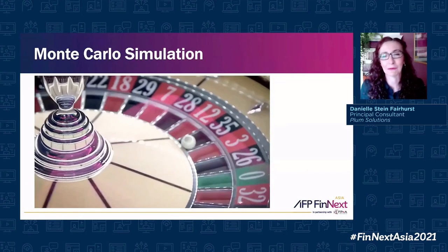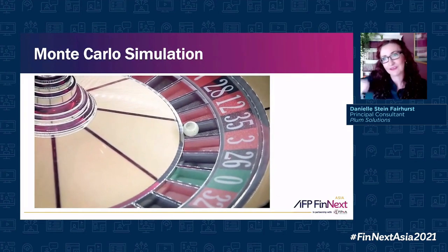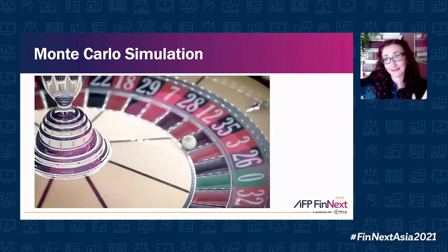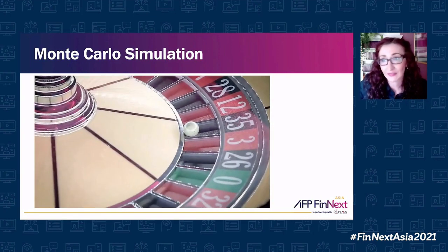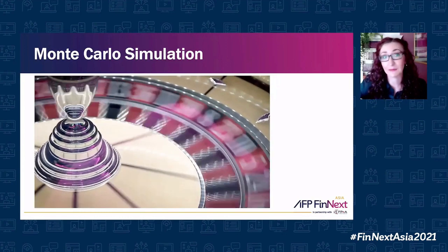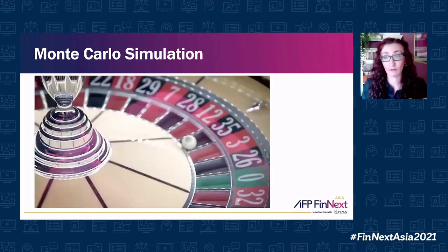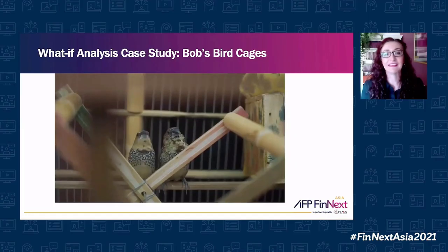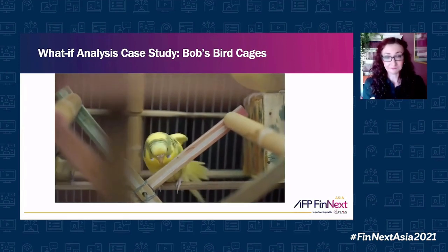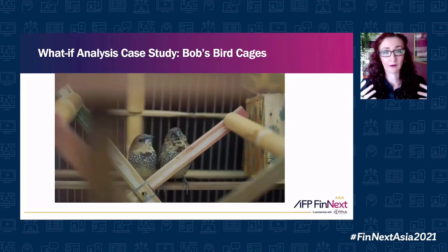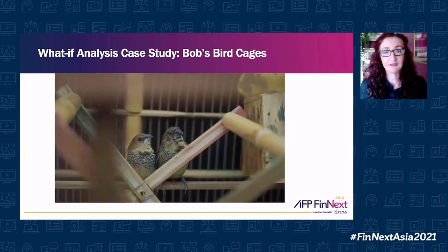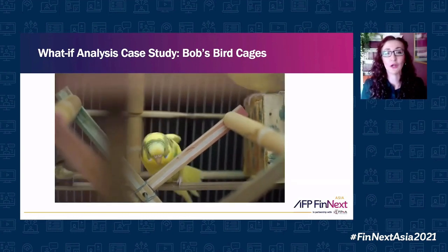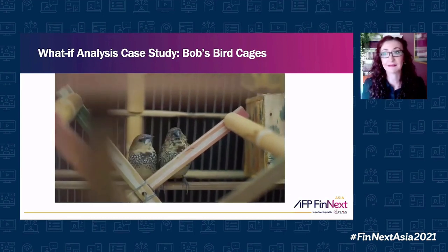The name Monte Carlo comes from the roulette wheel. When you're running Monte Carlo, you run simulations hundreds or even a thousand times. The example here is that you are producing bird cages, each of which sells for $125, and we want to know what is the probability of making a profit.